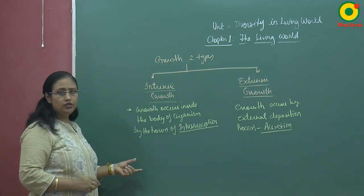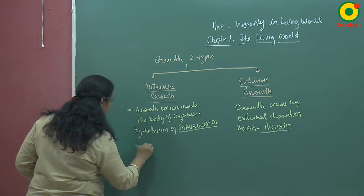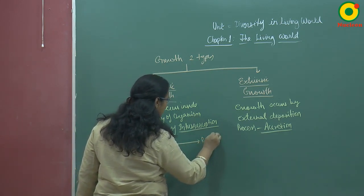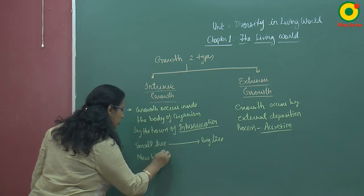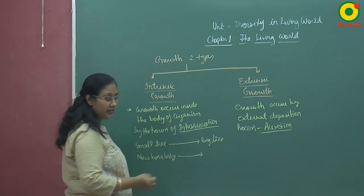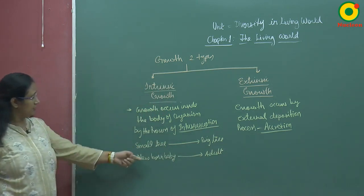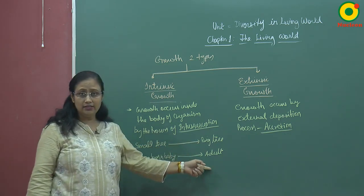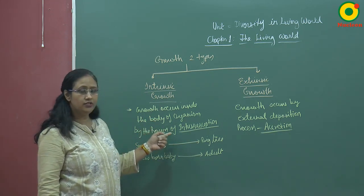In case of intrinsic growth, a small tree grows into a big tree, or a newborn baby grows into an adult human being. This growth of a small tree into a big tree and the growth of a newborn baby into an adult occurs due to internal growth — by internal accumulation, by internal addition of substances, by the process of interception. Extrinsic growth is reversible, whereas intrinsic growth is irreversible.